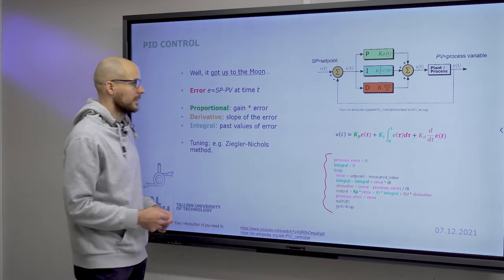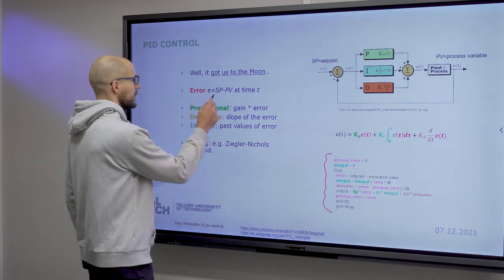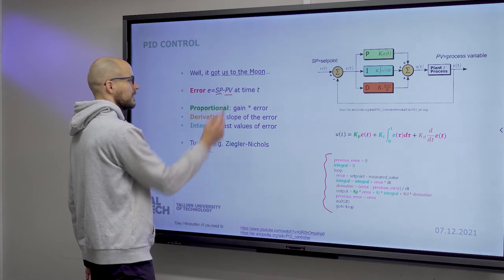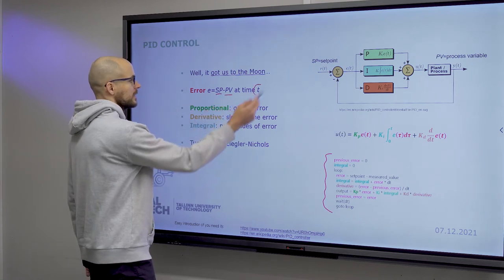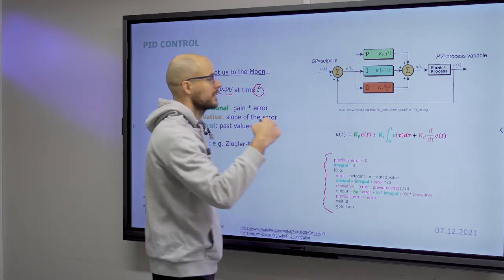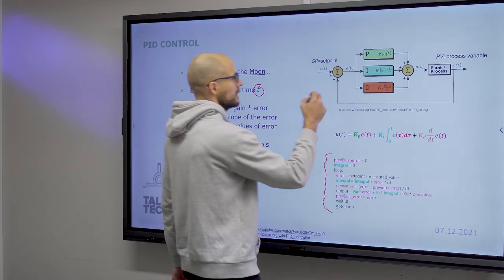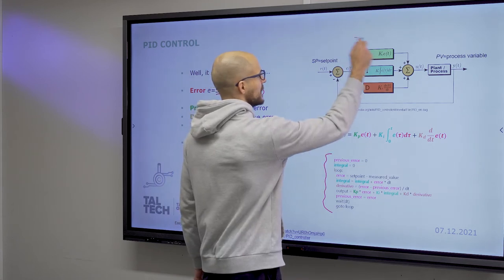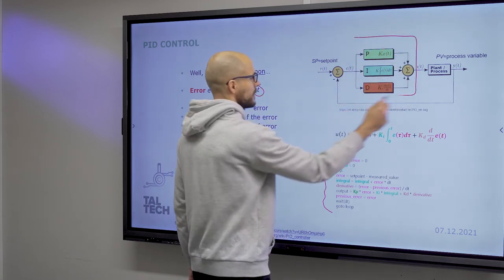So in this case, the error is defined as a difference between the setpoint and the process variable at any time moment. And this error is fed back to the input. But the gain consists of three members.